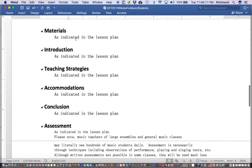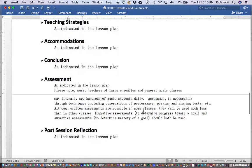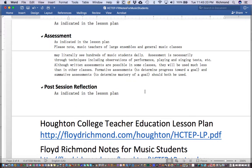I'm going to switch back over to my notes. Pretty much everything here is as indicated in the HCTECP lesson plan. When it comes to assessment though, I really do have to talk a little bit specifically to music teachers. You will create your assessments as indicated in the lesson plan, but please note: music teachers of large ensembles and general music classes may literally see hundreds of music students daily. You don't have time to do the written assessments that are common in other classes. Basically, you are necessarily going to do a lot of assessment through techniques which include observations of performances, playing and singing tests, and so on. Written assessments are possible in some classes, but they will be used much less in music class. Formative assessments to determine progress toward a goal and summative assessments to determine mastery of a goal should both be used in music class.